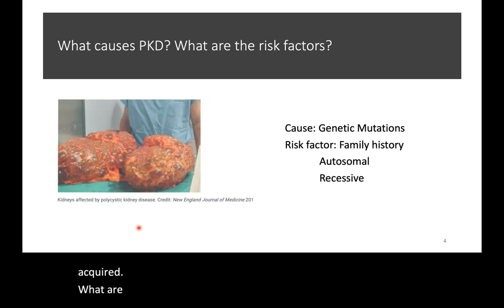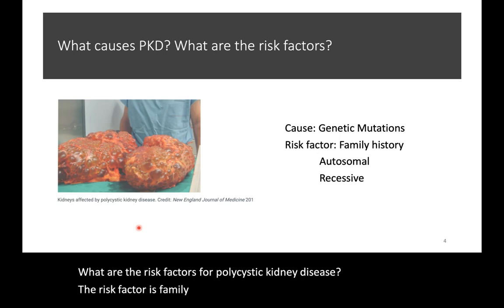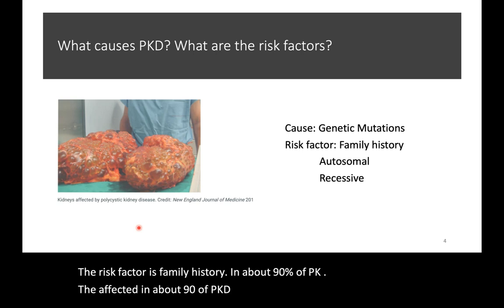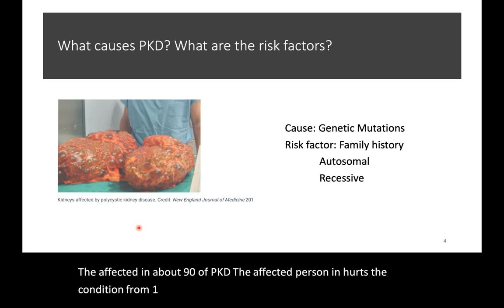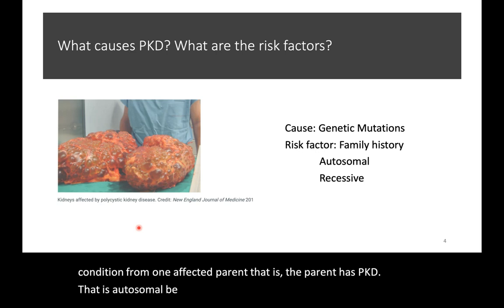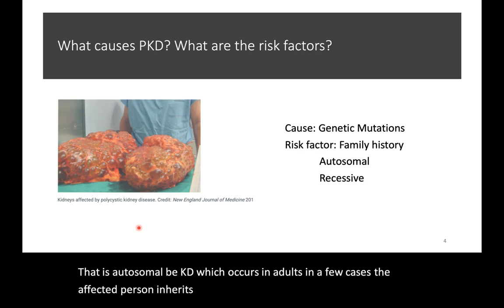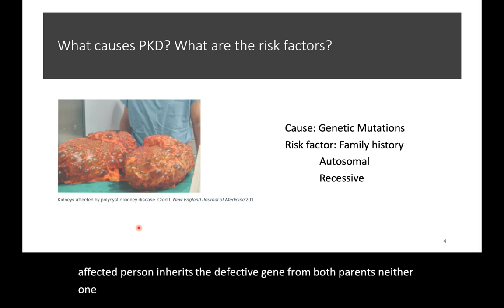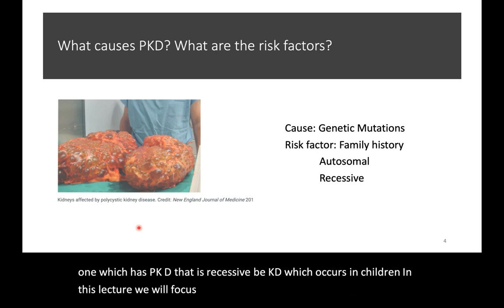The risk factor is family history. In about 90% of PKD, the affected person inherits the condition from one affected parent — that is, the parent has PKD. That is autosomal PKD, which occurs in adults. In a few cases, the affected person inherits the defective gene from both parents, neither one of which has PKD. That is recessive PKD, which occurs in children.